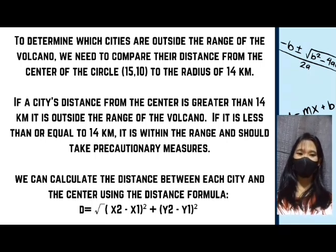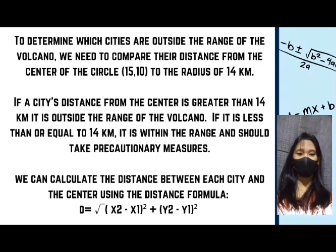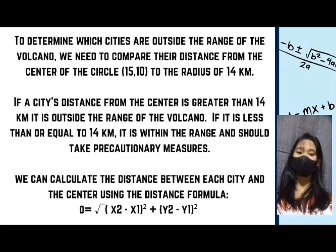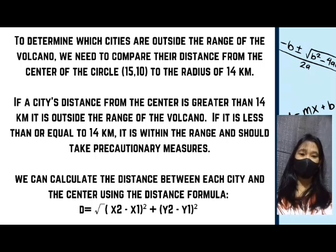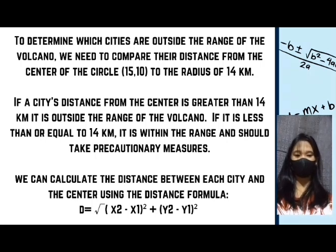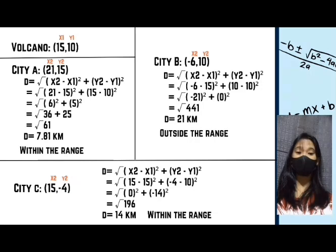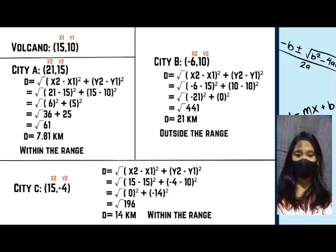We can calculate the distance between each city and the center using the distance formula: D = √[(x₂ - x₁)² + (y₂ - y₁)²]. We identify x₁ and y₁ as the coordinates of the volcano (15, 10), and x₂ and y₂ as the coordinates of each city.